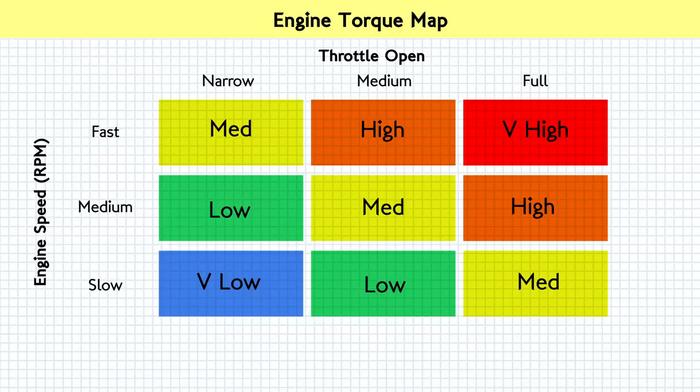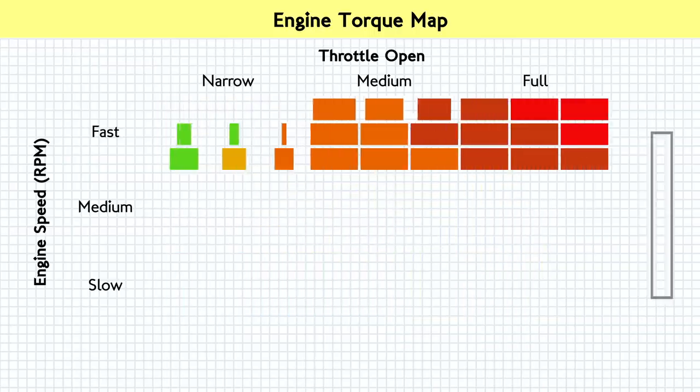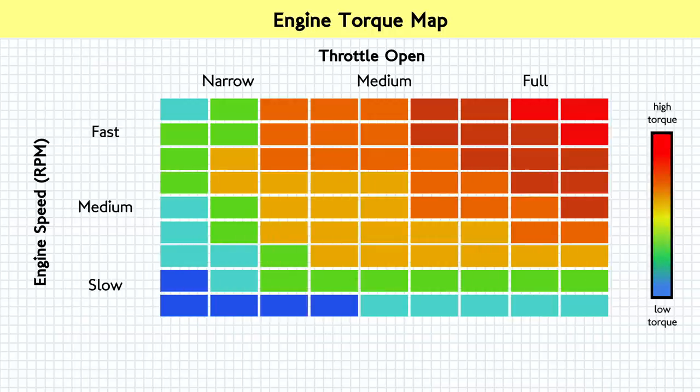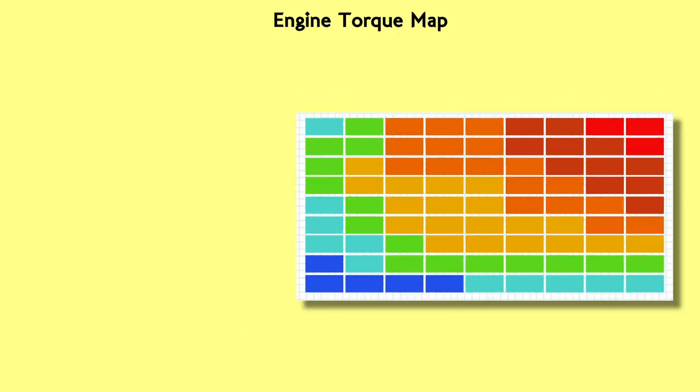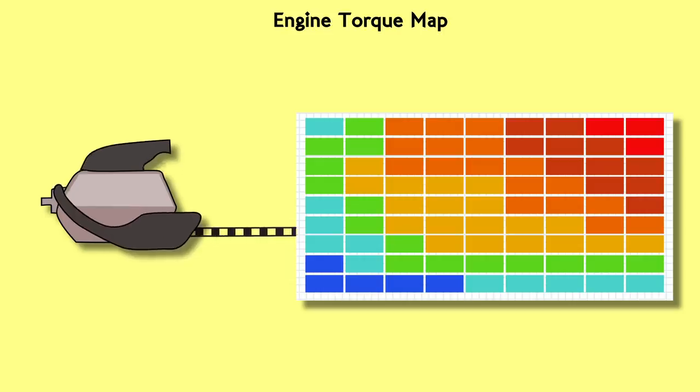Now obviously the engine map used in real life is a lot more granular than that, using more than just our three gradations of input. But this one looks a lot more daunting than our one at first glance. So really this engine torque map just describes the engine as it normally behaves. We can gather this data by running the engine on a testing dyno and logging its torque levels under different scenarios.